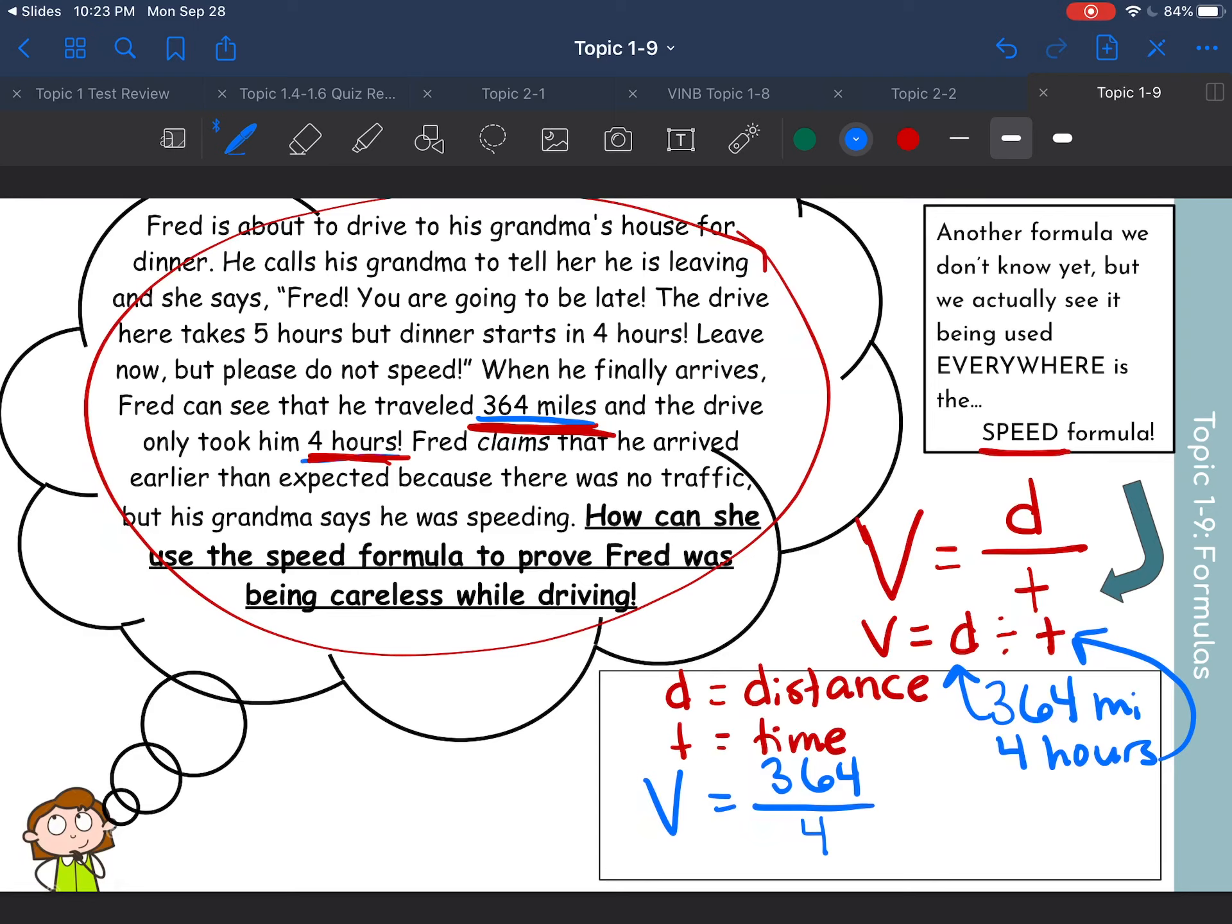And if we solve that problem, we should get our answer. So right now, on a scrap piece of paper, solve what 364 divided by 4 is. So if you solve it, V equals 91. And since this is miles and this is hours, it's actually 91 miles per hour or MPH. And you see that like on the highway when you're driving.